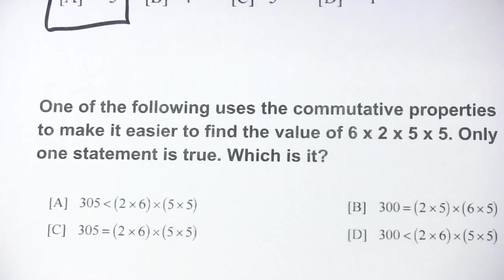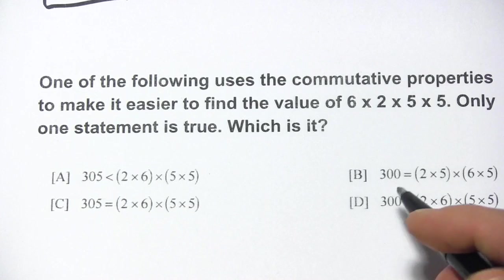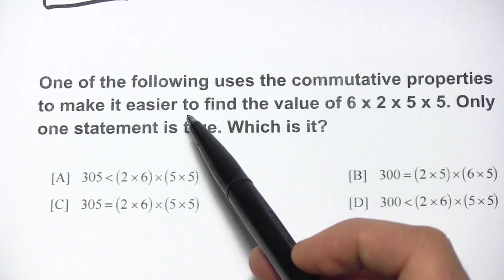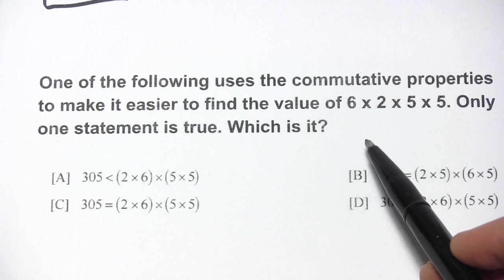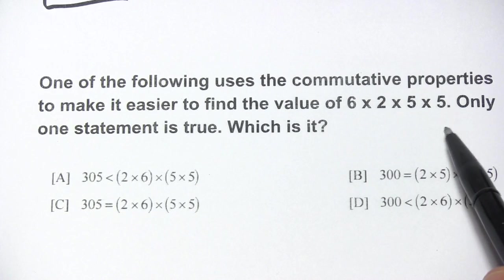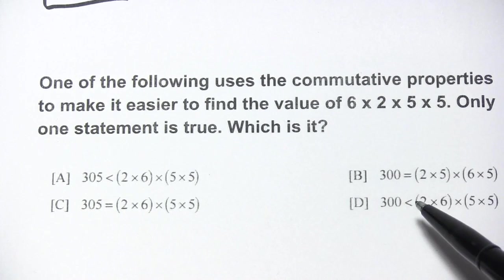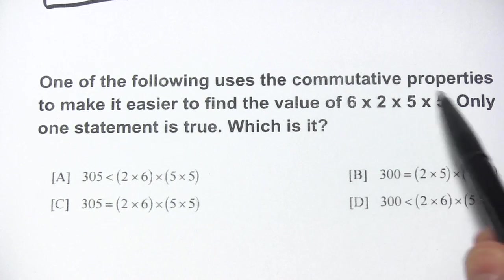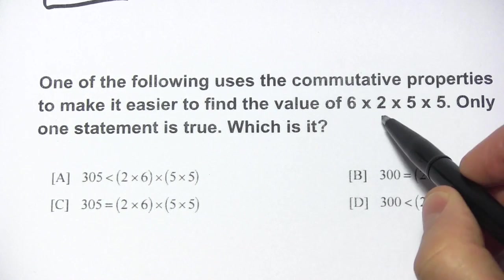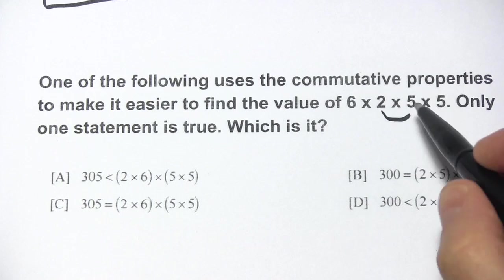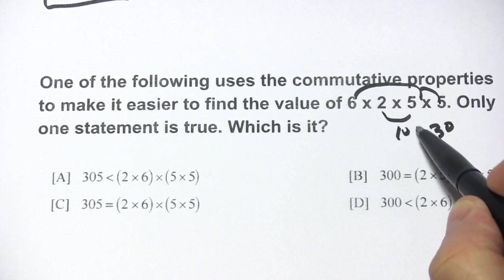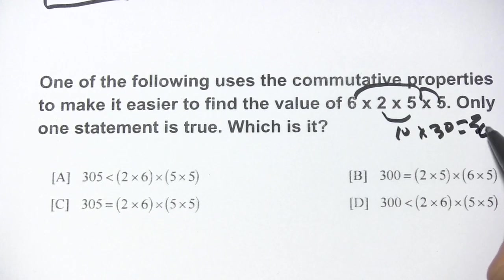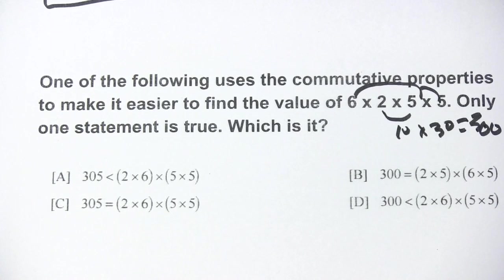Let's look at one more problem about the commutative property. This one says: which of the following uses the commutative property to make it easier to find the value of six times two times five times five? Only one statement is true. If I were doing this in my head, I would group two times five together because that's ten, and then six times five is thirty. So this is ten times thirty, which is three hundred. That's using the commutative property to find three hundred.